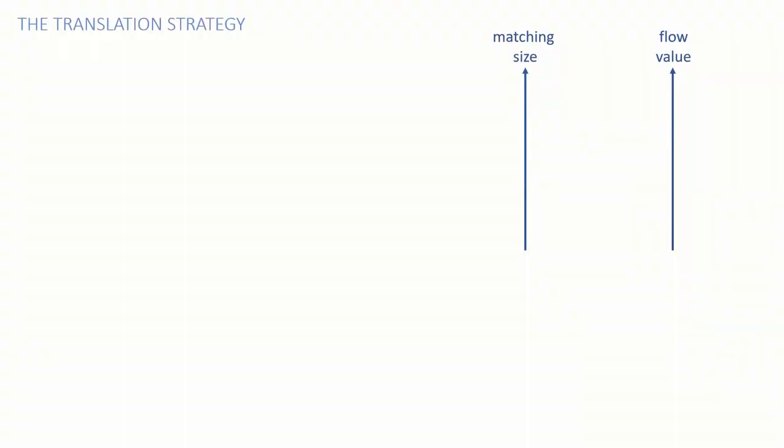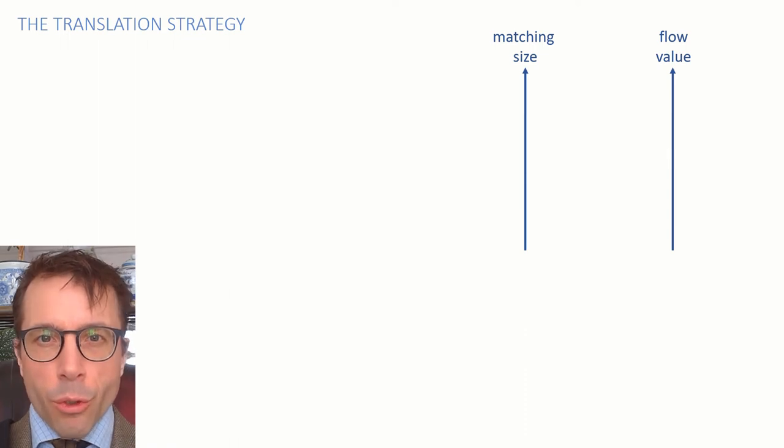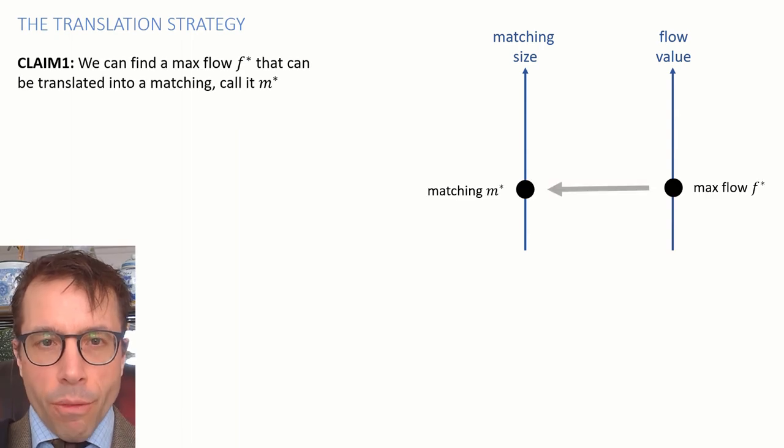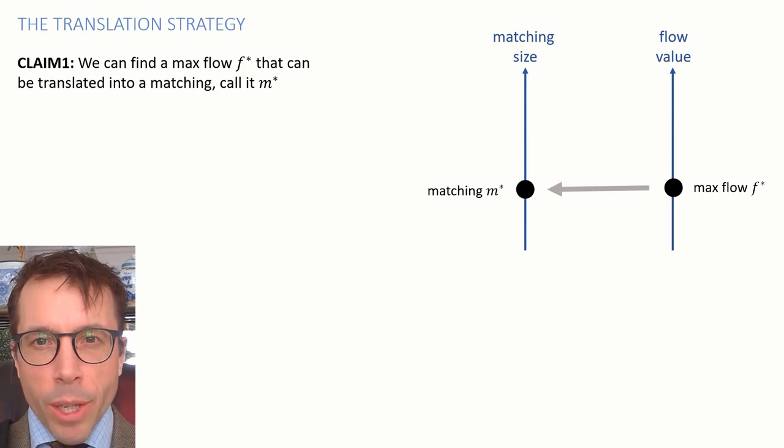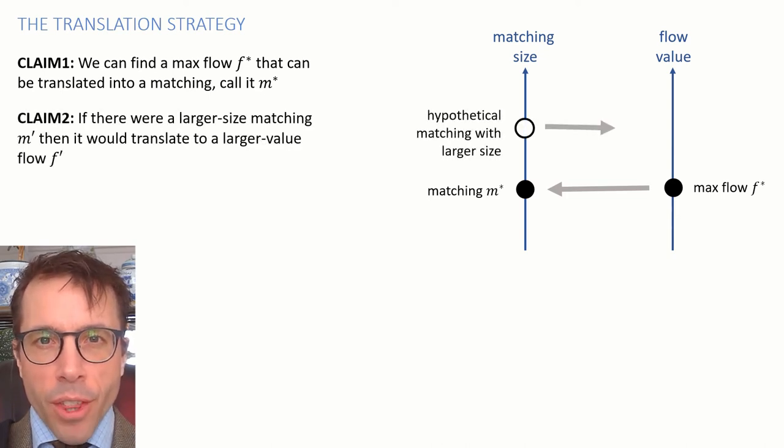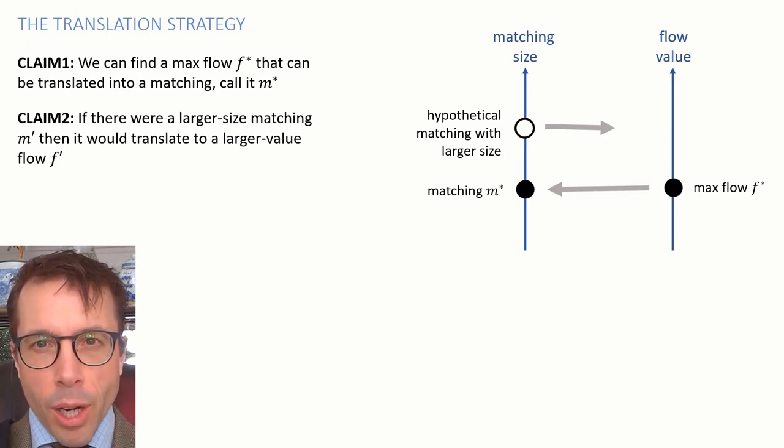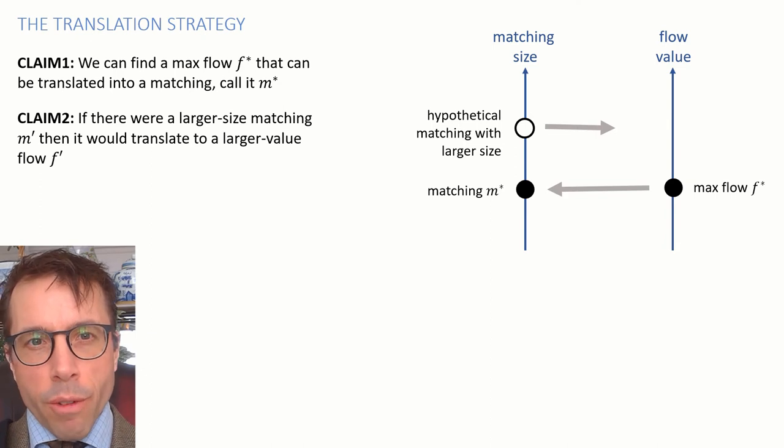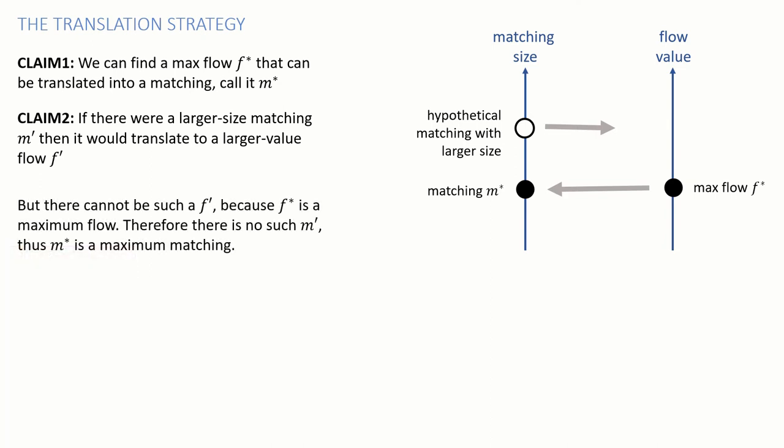Whenever we use the translation strategy, there are two claims that we have to justify. I'm going to write them out here for the particular case of maximum size matching solved using max flow, but the structure of this argument is universal. We have our two problem domains, the matching domain and the flow domain. And we have to be able to justify two separate claims. The first claim is that we can find an optimal solution to the max flow problem, which can be translated into a matching. Let's call it M*. The second claim is that if there were some hypothetical larger size matching, call it M', then it would translate into a flow F' with larger flow value. And then the proof just finishes itself happily. There cannot possibly be such a flow F' because F* is a maximum flow. Therefore, there is no such M'. Therefore, M* is a maximum matching.